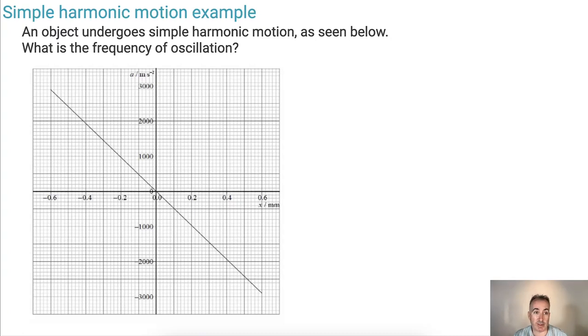Let's put this all together with an example. Here we have a graph. We're told that an object undergoes SHM. What's the frequency of oscillation? How can we do that from just a graph? Let's remind ourselves, what's the equation we need? It's A = -ω²X.